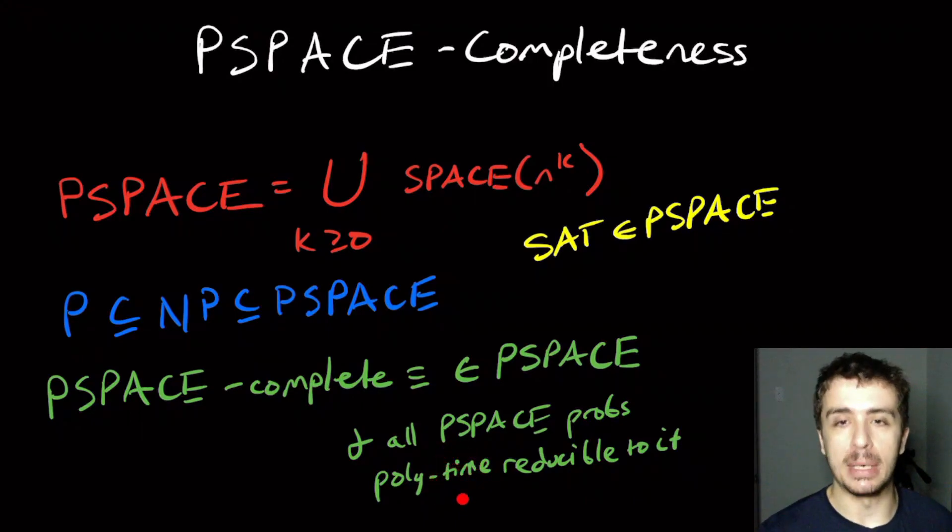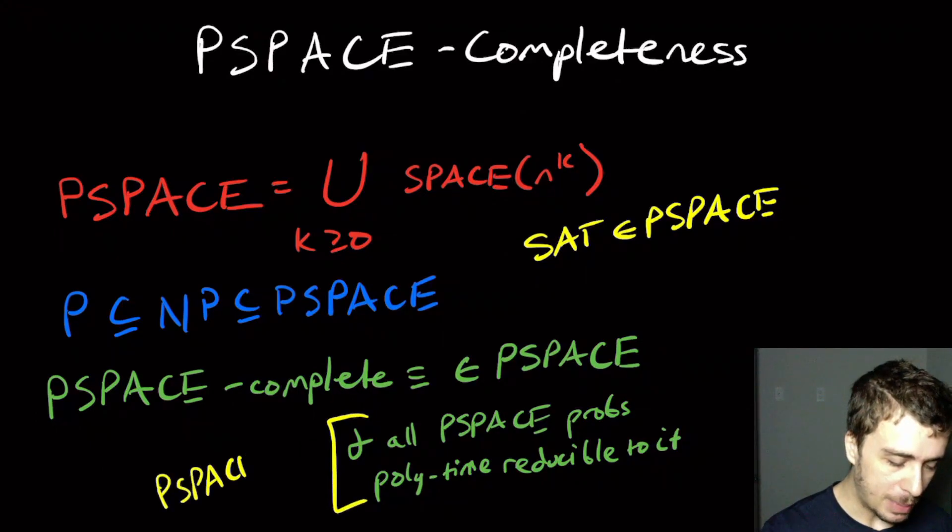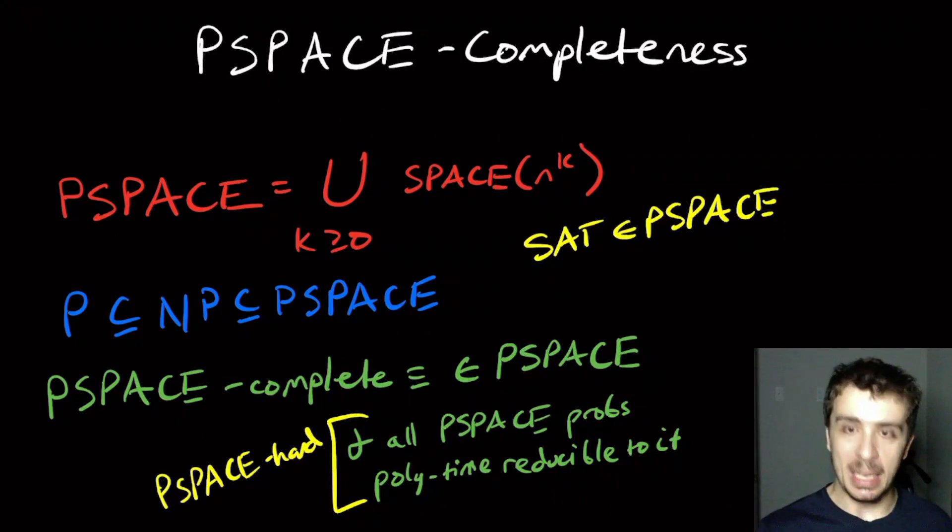That's not going to really help us all that much. So we want something that's strictly less, or we believe to be strictly less, than the amount of resources that we're allowed to use. So we're going to use polynomial time. This notion right here is what is known as PSPACE-hard. To show that something is PSPACE-complete, all that you have to do is show that it is in PSPACE and it is PSPACE-hard.